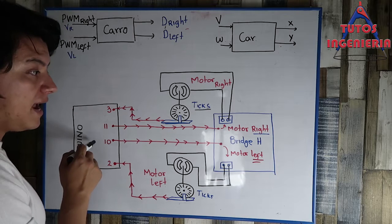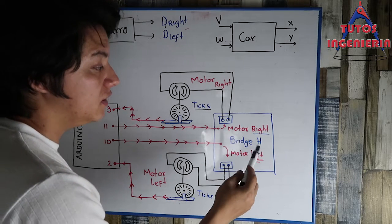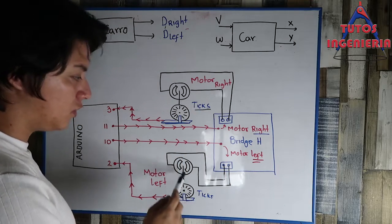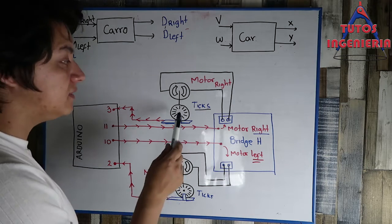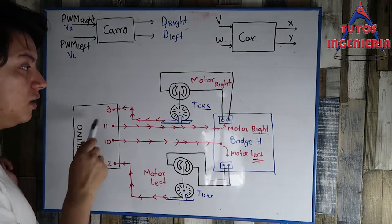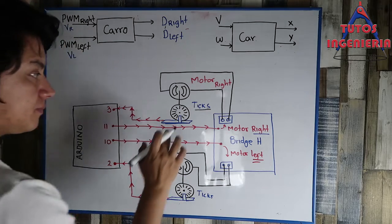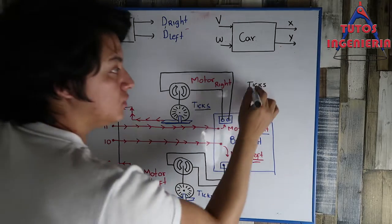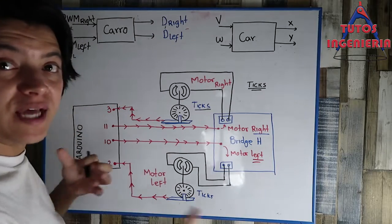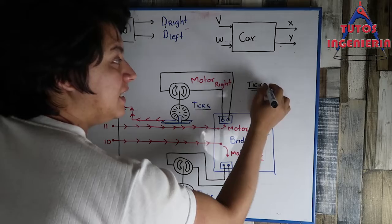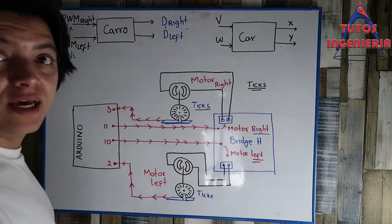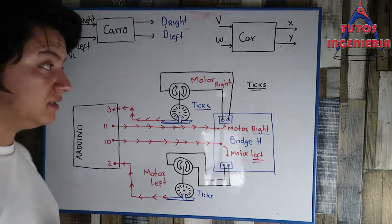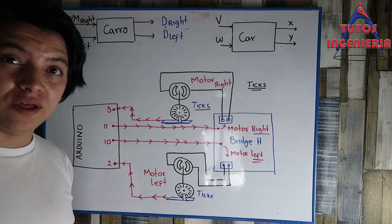But in the real model, we have an Arduino that sends a signal to a shield called the bridge edge, and that bridge makes the right motor and left motor move. That movement makes the encoders send a signal back to the microcontroller. So here, the outputs we obtain from the plant are ticks — the Arduino obtains ticks from the encoders, not position x and y.